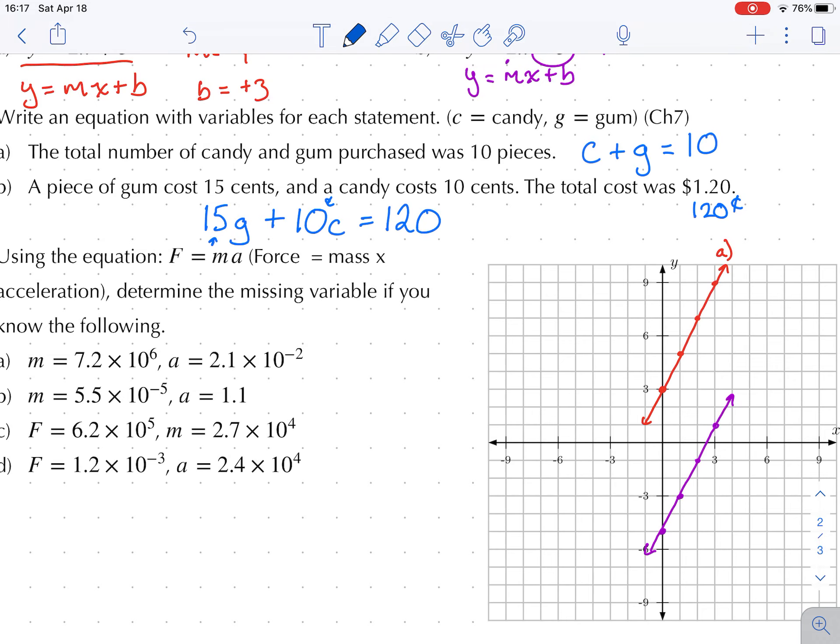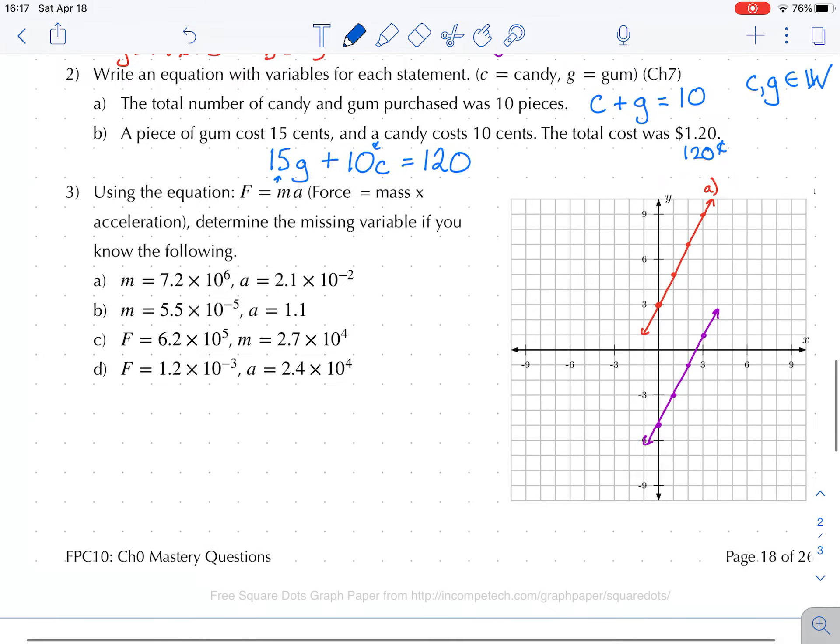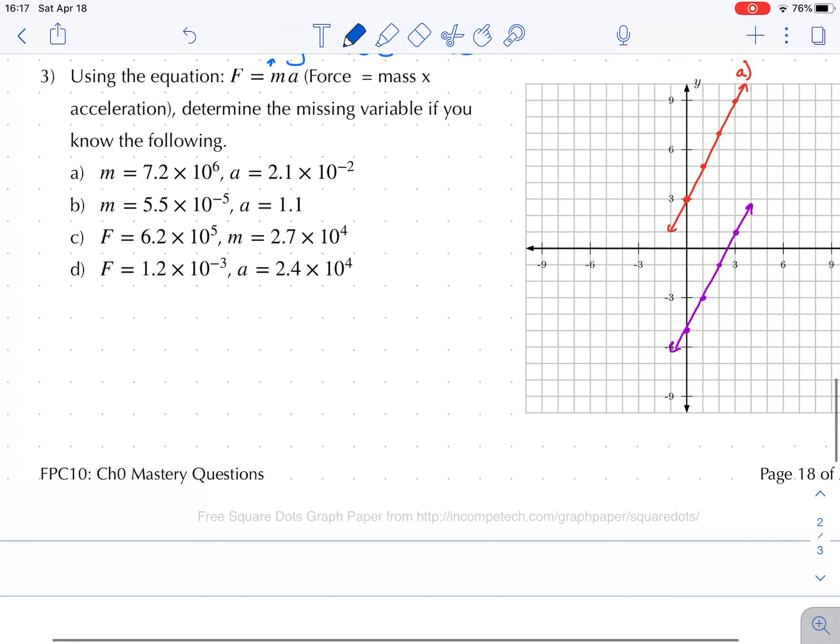Now this equation will work, because each piece of gum was 15 cents, each piece of candy was 10 cents, and the total was 120 cents. Now when you're buying candy and gum, you do not buy half a piece of candy or half a piece of gum. You only buy whole numbers of candy and gum. So candy and gum would be an element of the whole numbers. You could buy zero candies or one candy, but not 1.5 candies.